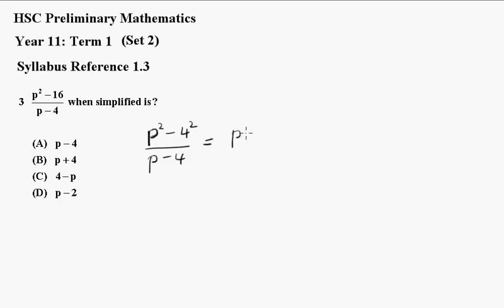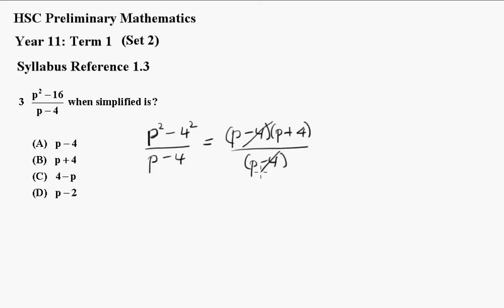So that's p minus 4 times p plus 4, all over p minus 4. And because they cancel out, you just get p plus 4, which is b.